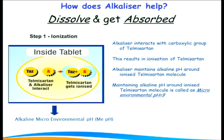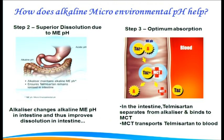In Step 1, the unique alkalizer meglumine interacts with the carboxylic group of telmisartan, causing ionization and maintaining an alkaline pH above 9 around the ionized telmisartan molecule — this is the microenvironmental pH. In Step 2, this microenvironmental pH is maintained through the GI system into the upper jejunum, where more than 80% of telmisartan gets absorbed, improving dissolution. Ultimately, telmisartan detaches from the alkalizer and binds with MCT (monocarboxylate transporter), which transports the product into the bloodstream.